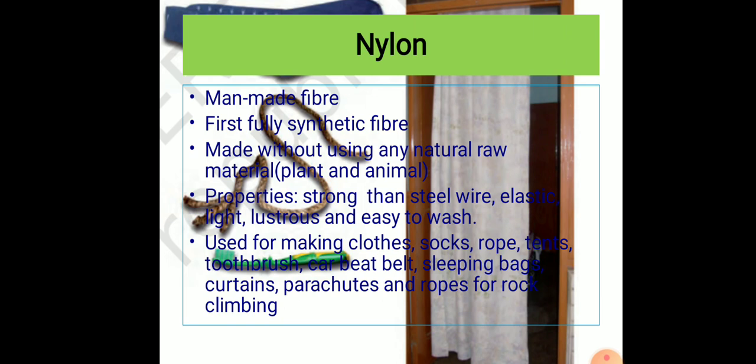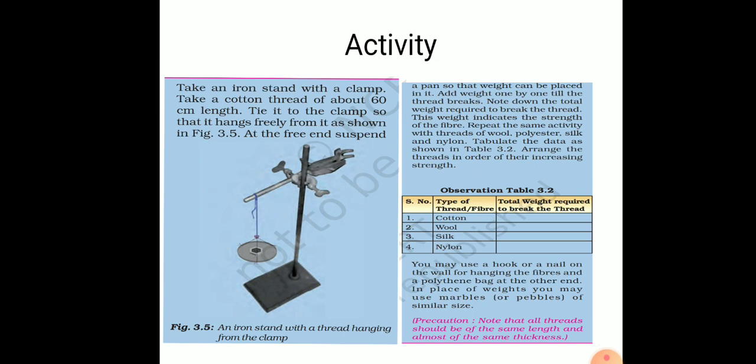To test the properties, let us perform a small activity. Take an iron stand with a clamp and a cotton thread of about 60 cm length. Tie it to the clamp so it hangs freely. At the free end, suspend a pan so weights can be placed in it. Add weights one by one till the thread breaks. Note down the total weight required to break the thread—this indicates the fiber's strength. Repeat the same activity with threads of wool, polyester, silk, and nylon, and tabulate the results.